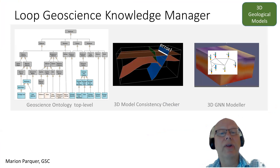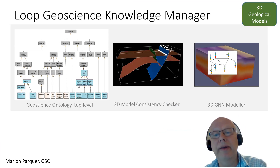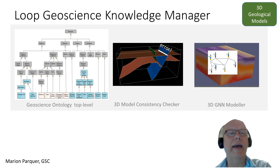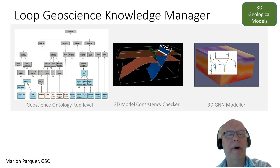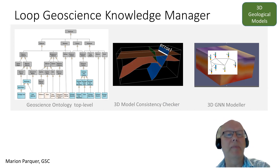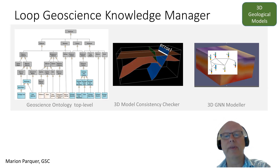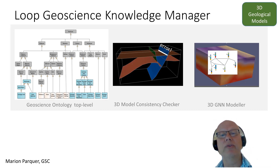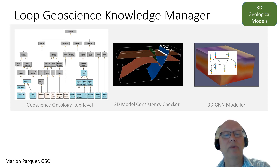The Loop Geoscience Knowledge Manager, developed by the Geological Survey of Canada, is producing a geoscience ontology. Part of that work is also producing a 3D model consistency checker — this is the work of Marion Parker — so this idea that we can compare our 3D models back to our original data or original concepts is another part of this multi-level cycling that we'll probably need to be doing in the future. Mike Hillier is going to talk about the GNN modeler, so I won't cover that here.